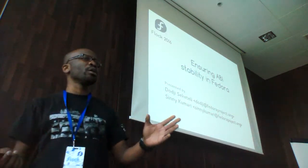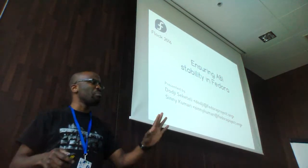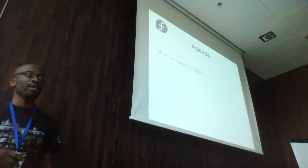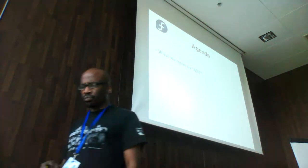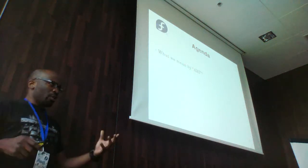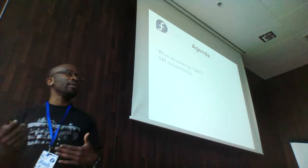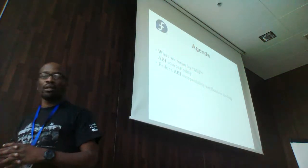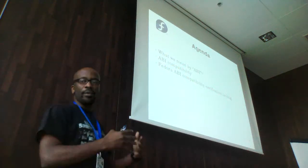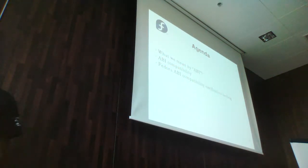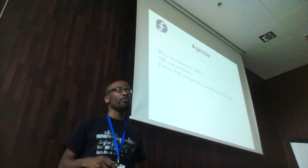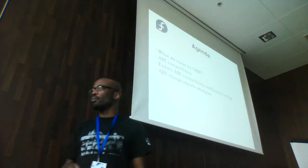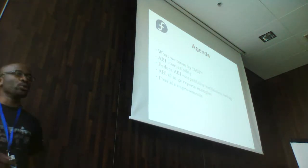In today's presentation we're going to focus on five points. First, I'll try to explain what we mean by an application binary interface — a fuzzy area. Then we'll talk about ABI compatibility in general, the tooling we have in Fedora today to tame ABI changes, some real examples of ABI change reports in production in Fedora, and then we'll talk about future directions.